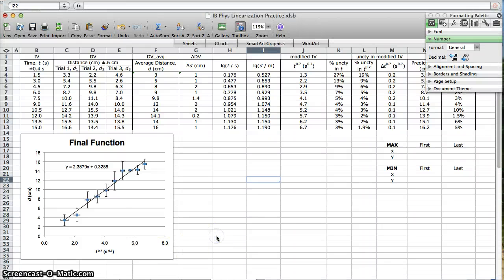This is a video where I'm going to show you how to find the max and min slope lines for an IB Physics Lab Report using Excel.